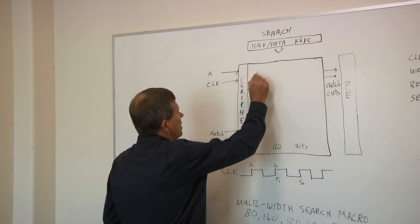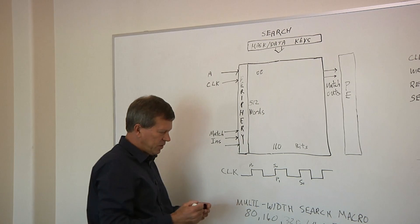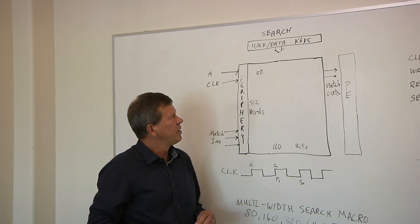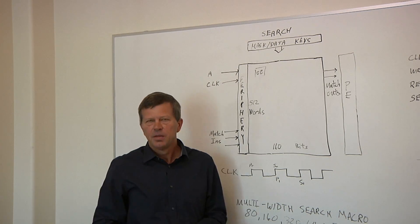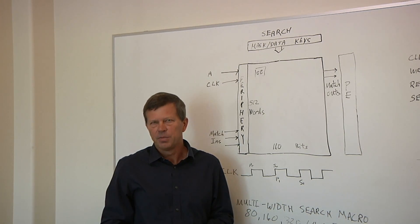Now, each one of the bits inside this array comprise of two storage elements. And the reason for the two storage elements is a ternary cam, which means there's three states. Because there's two storage elements in the bit cell, it makes the TCAM very large in area on the die.